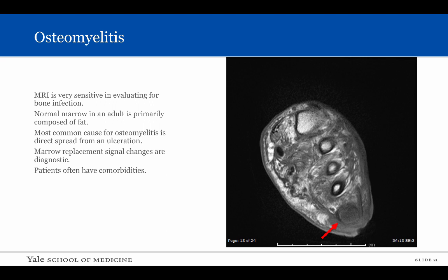MRI is very useful in evaluation of osteomyelitis. Normal adult bone marrow is primarily composed of yellow marrow. This patient had an ulceration along the lateral aspect of the foot and the normal fat signal within the fifth metatarsal has been replaced with the darker signal of the infected fluid.